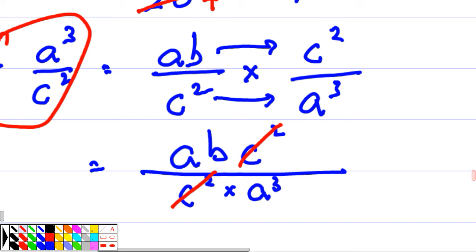a and a cubed. a and a cubed. I cancel a. Below will be left with how many? Square. Square or 2? Square or 2? Okay.